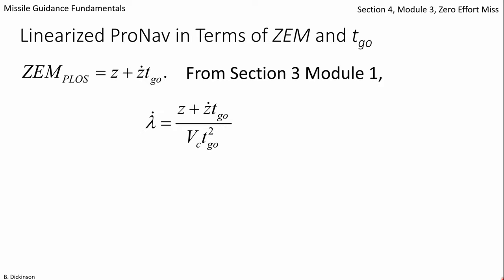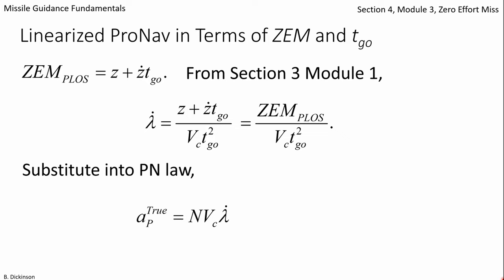In the numerator, note that it's simply the zero effort miss normal to the line of sight. And now substituting that lambda dot back into the true pronav law.